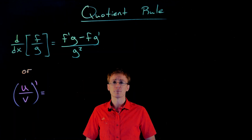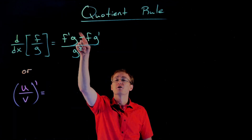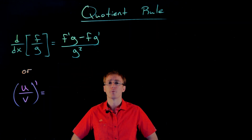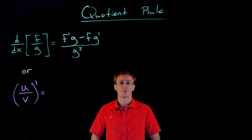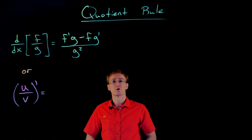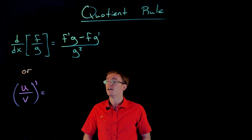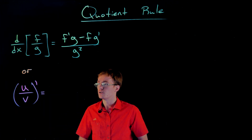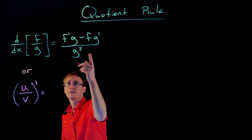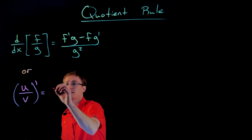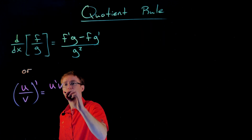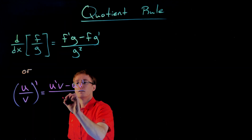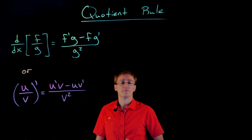That numerator should look very similar to what we have in the product rule — just make that plus sign a negative and then divide by g squared. That can help you remember your quotient rule. We can also write the quotient rule using u/v notation: if we want to take the derivative of u divided by v, it's going to be u prime times v minus u times v prime, all over v squared.